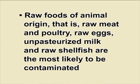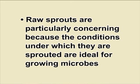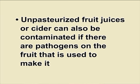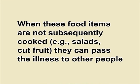Foods associated with foodborne illness. Raw foods of animal origin — raw meat and poultry, raw eggs, unpasteurized milk and raw shellfish — are the most likely to be contaminated. Fruits and vegetables can also be contaminated with animal waste when manure is used to fertilize produce or unclean water is used for washing. Raw sprouts are particularly concerning because sprouting conditions are ideal for growing microbes. Unpasteurized fruit juices can also be contaminated if there are pathogens on the fruit used to make them. Any food touched by a person ill with vomiting or diarrhea can become contaminated; when these items are not subsequently cooked, such as salads or cut fruit, they can pass the illness to other people.